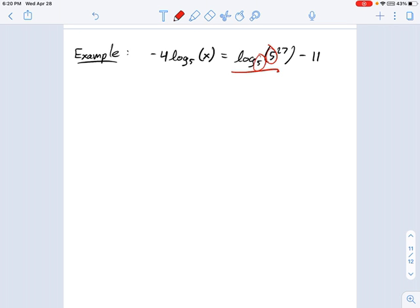It's log base 5 of 5 to the 27. This is an inverse property of logarithms. When you have log base b of b to the c power, what's that equal to? Well, it's always going to be equal to c. This is one of the basic properties of logs.